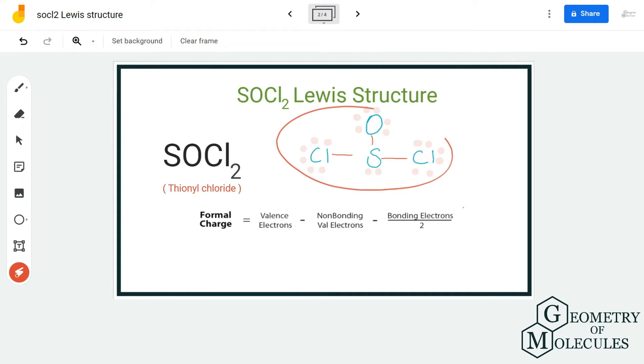Now you might be wondering that as we have used up all 26 valence electrons, this might be the Lewis structure of thionyl chloride, but hold on. Sulfur can have expanded octets, and whenever there is a molecule in which the atoms can have expanded octets, we always prefer to check the formal charges. Expanded octets means that it can have more than eight valence electrons in its outer shell, and that's the reason we always check for formal charges when we come across such atoms.